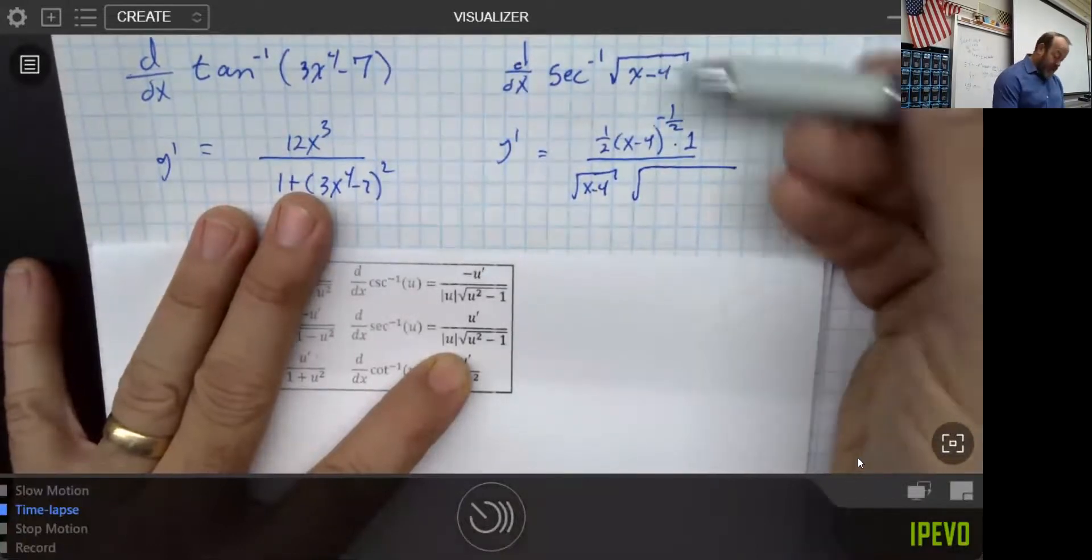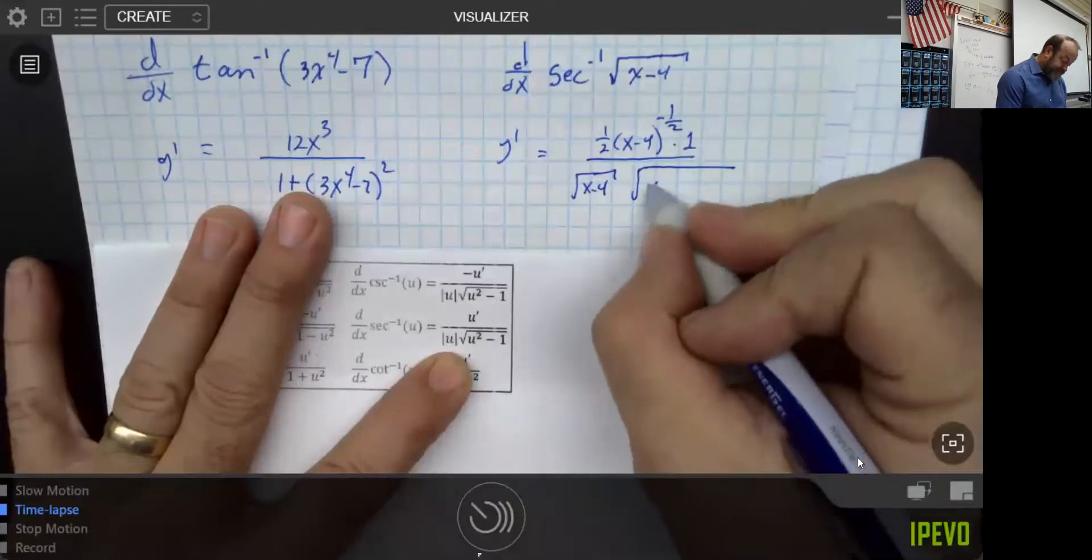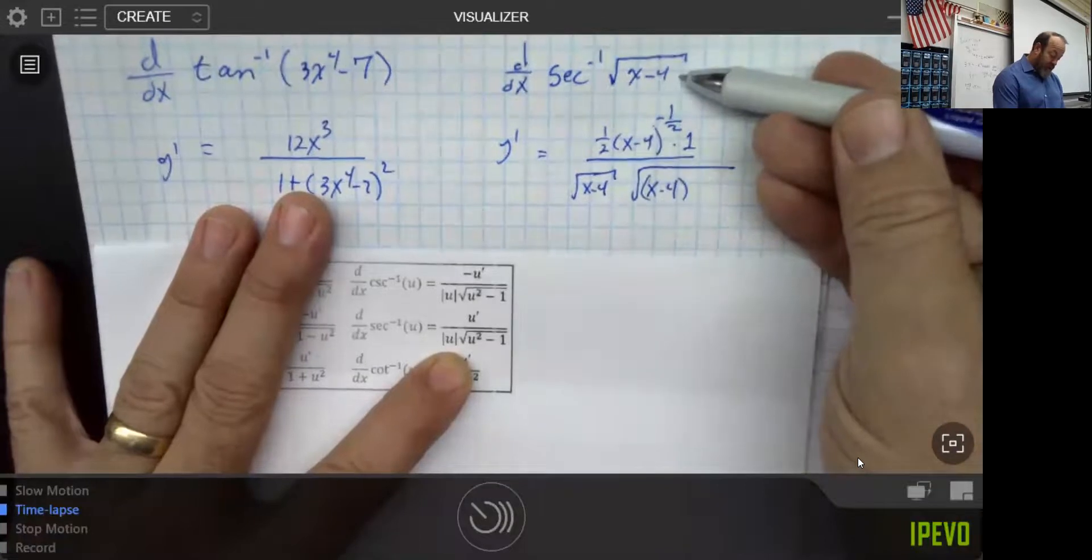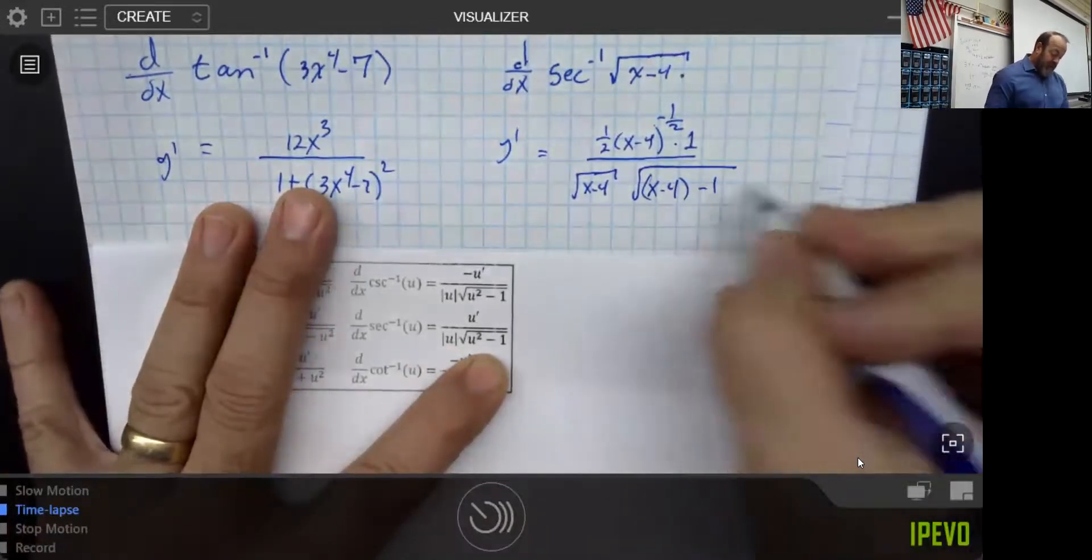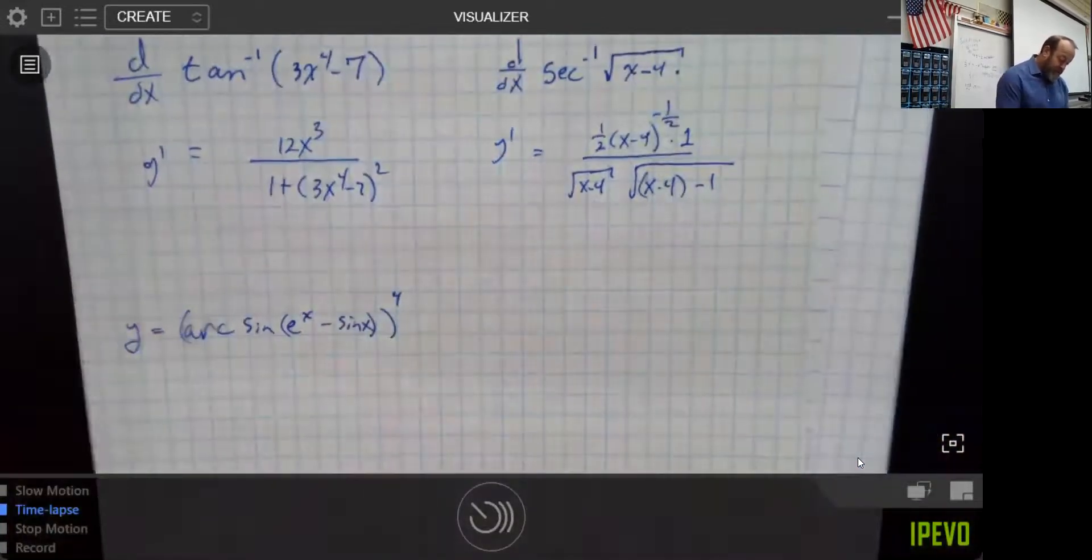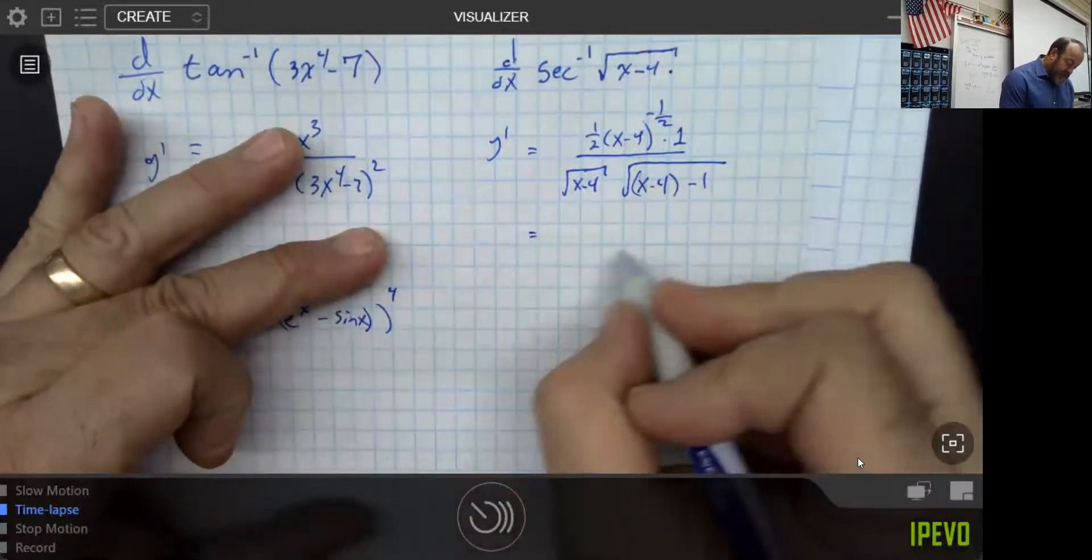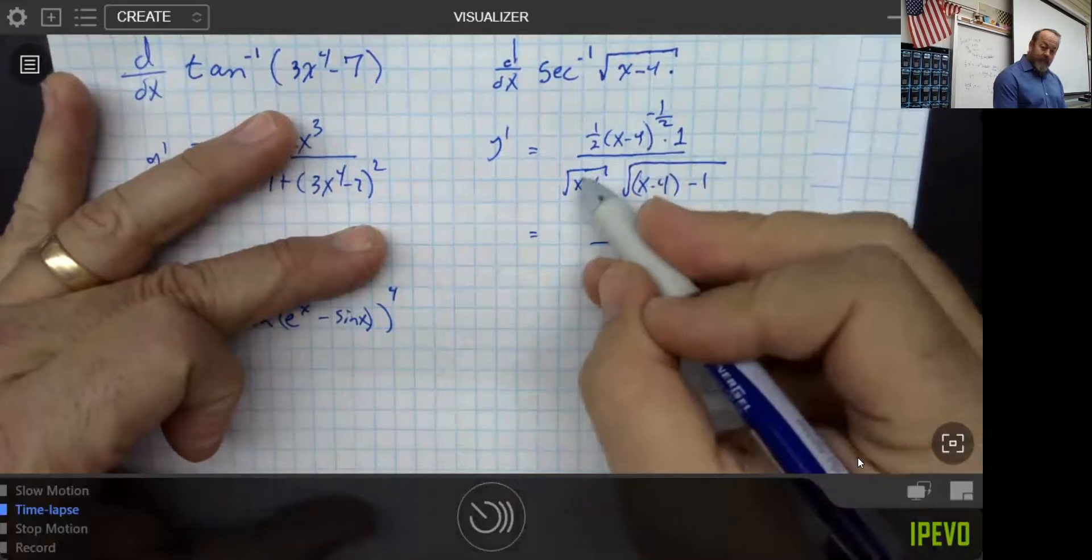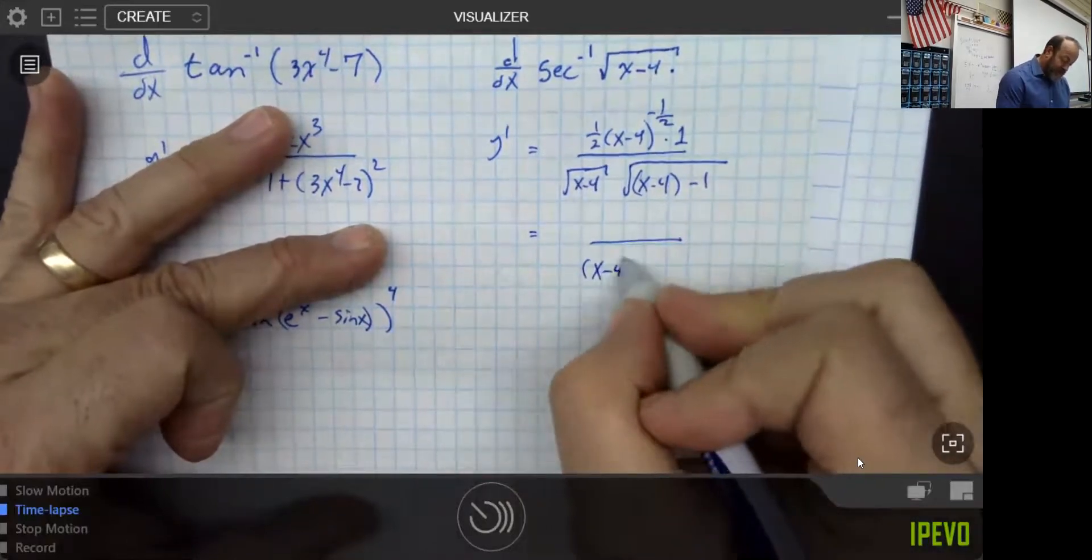And then I have to take the square root of whatever this u is squared, which, if I square that, I would get x minus 4, because that was u squared, and then minus 1.